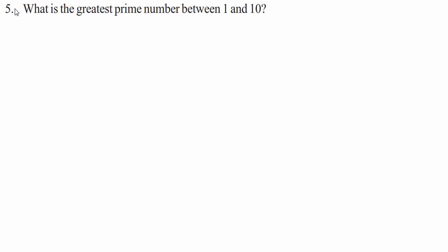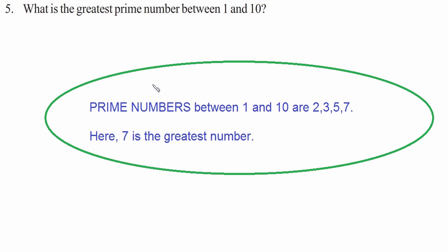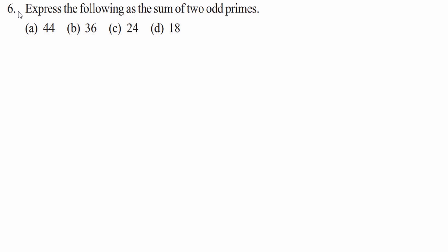Question five: what is the greatest prime number between 1 and 10? The prime numbers between 1 and 10 are 2, 3, 5, and 7. It is clearly visible that 7 is the greatest prime number between 1 and 10.